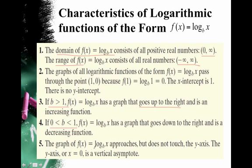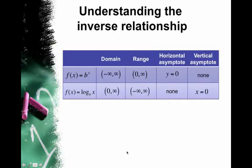And then the graph of f of x equals log base b of x approaches but never touches the y-axis. In other words, with exponential functions, we had a horizontal asymptote of y equals 0. Well, that gets flipped, and it's now in logarithmic functions, a vertical asymptote of x equals 0 or the y-axis.